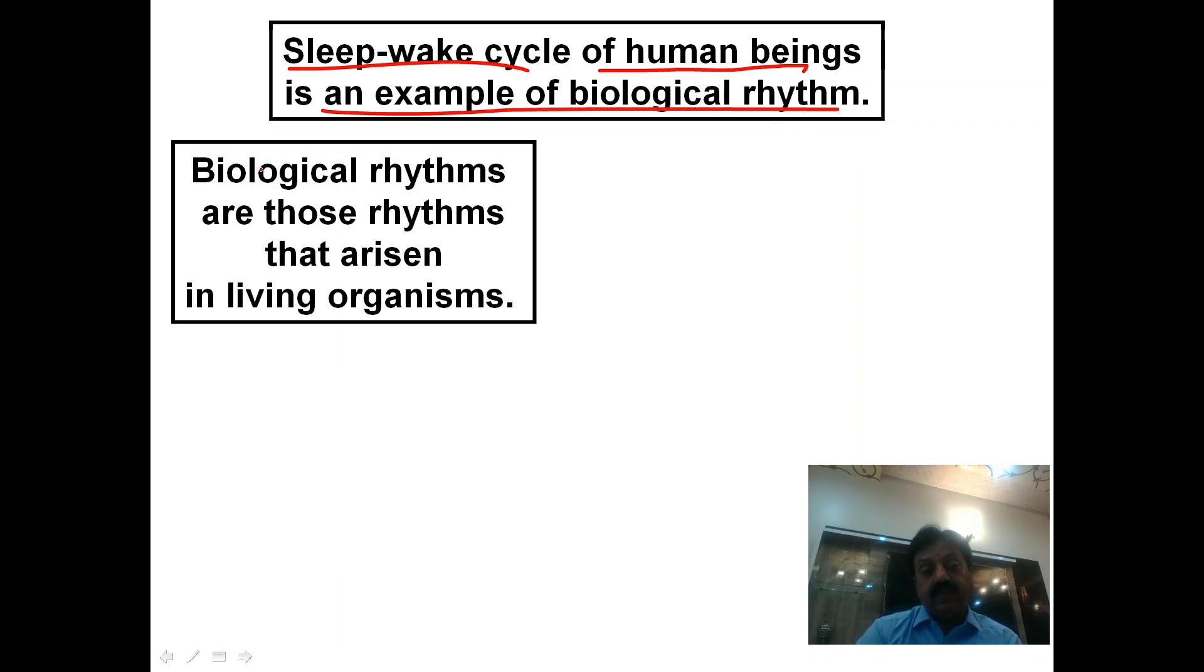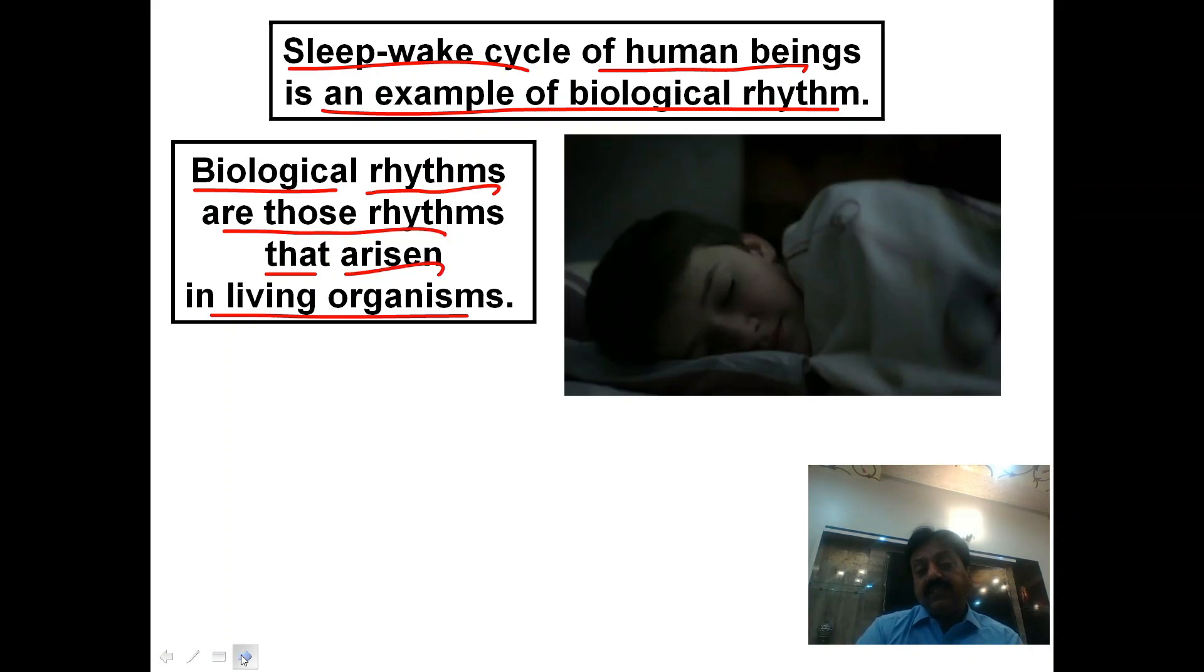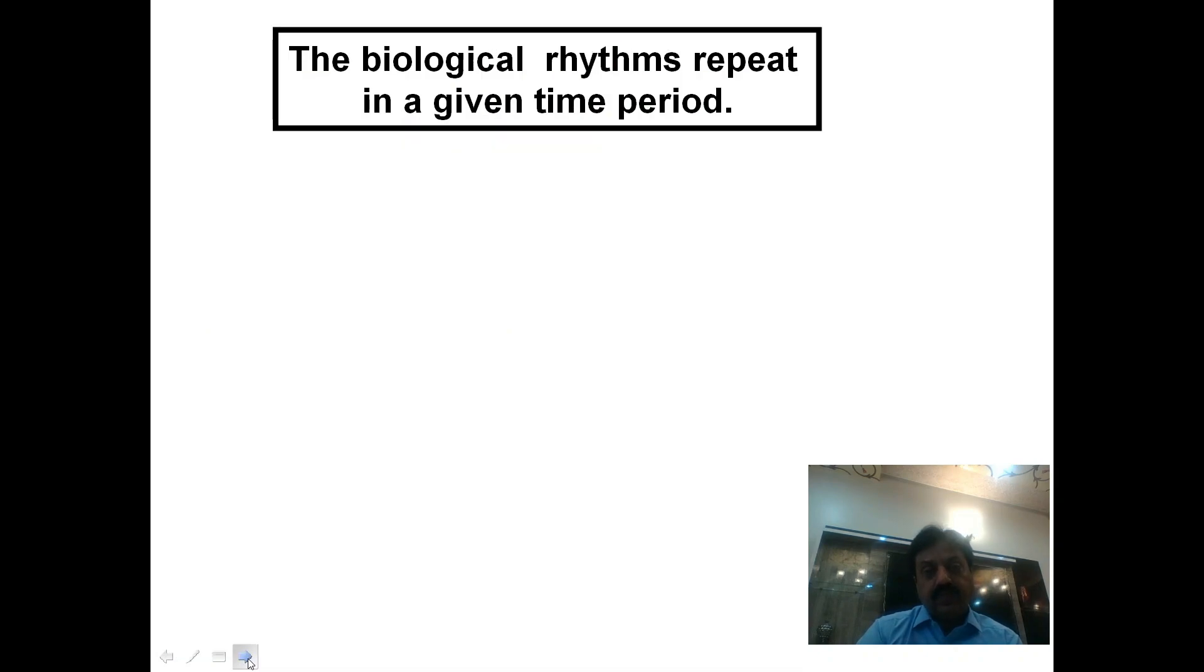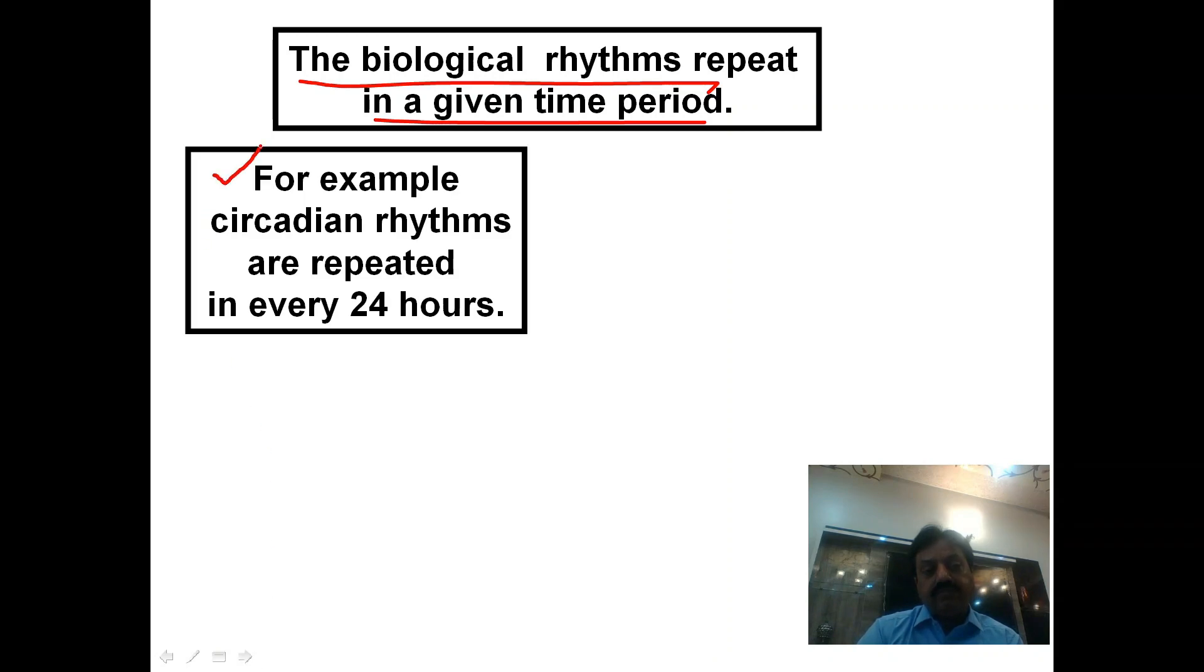Biological rhythms are those rhythms that arise in living organisms. Simply, rhythms of life are called biological rhythms. We sleep at night and wake during the day as an example of the sleep-wake cycle. Biological rhythms repeat in a given time period.